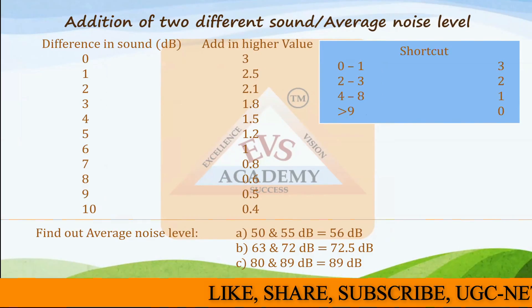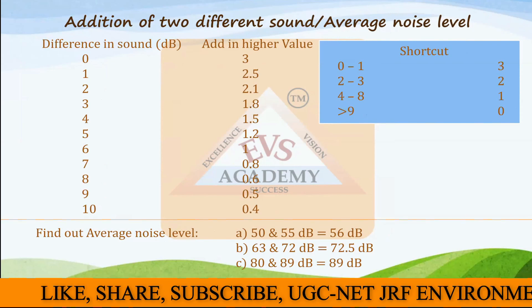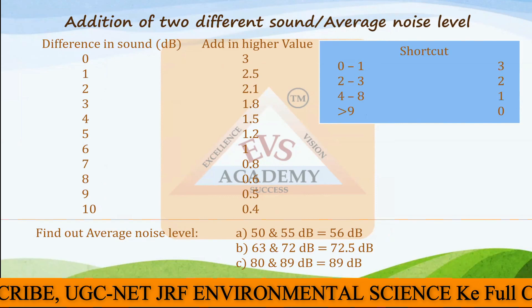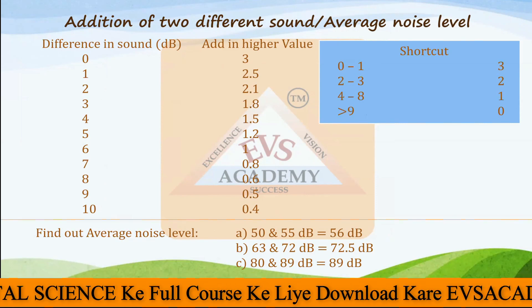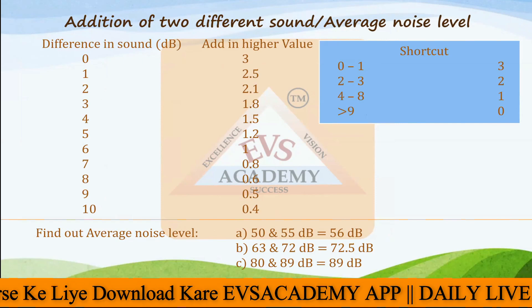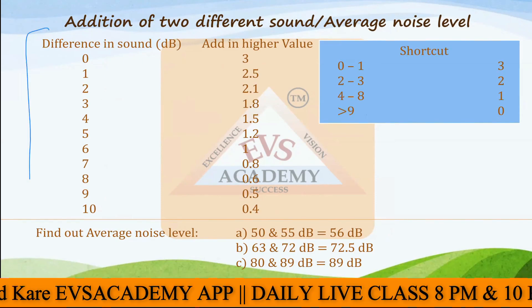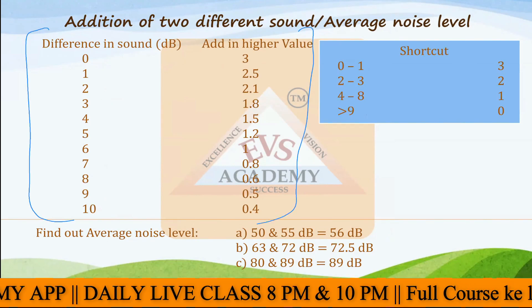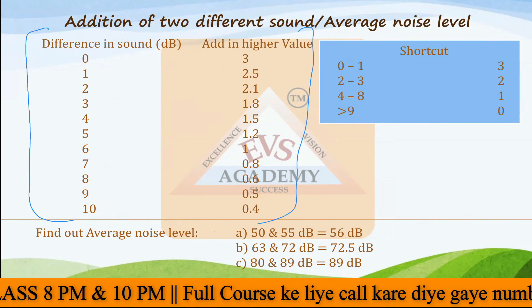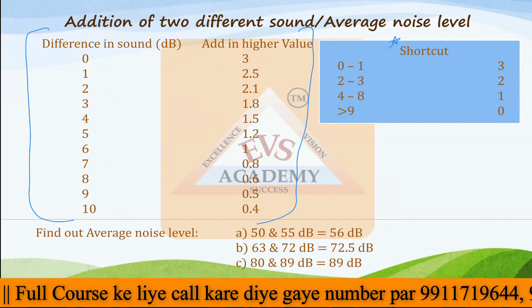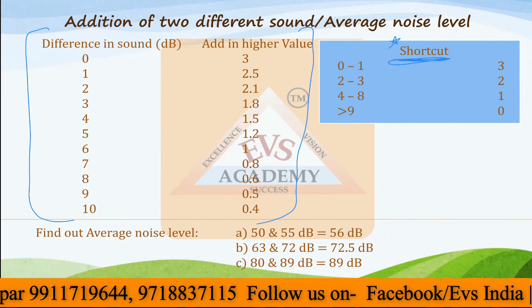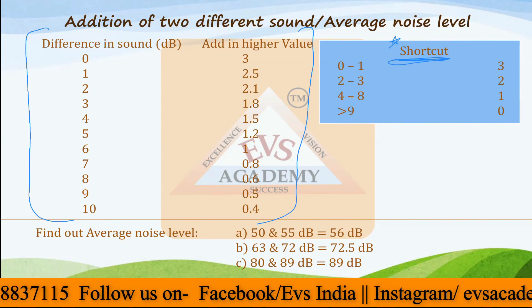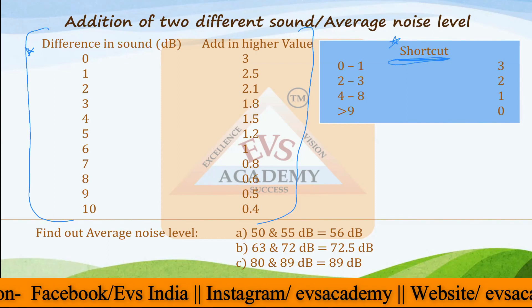Today we start the new topic: the addition of two different sounds coming from two different places or different distances. How do you calculate the average noise level or the new combined sound level created by two different sound sources? Here is a table that you have to remember. If you cannot remember all values, there is also a shortcut table for approximation. The shortcut table is only valid when options are far apart; for very close options, you must use the detailed table.